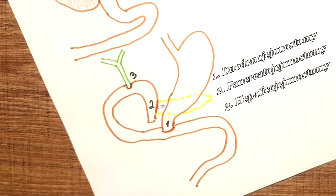The third is a so-called biliodigestive anastomosis, hepaticojejunostomy.